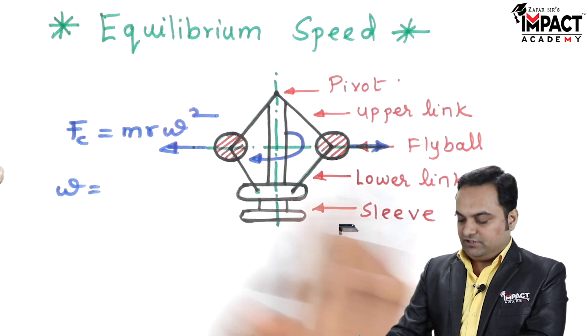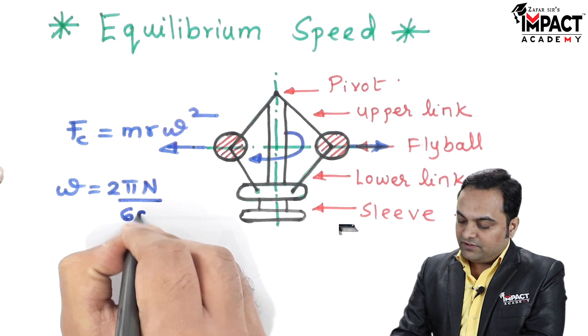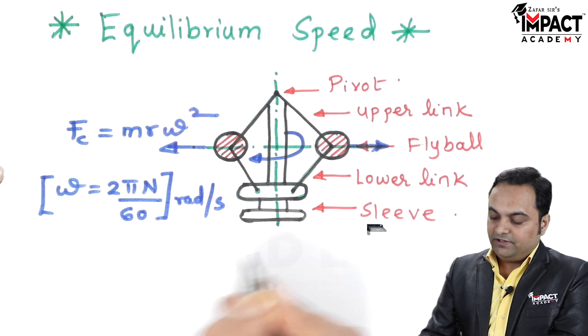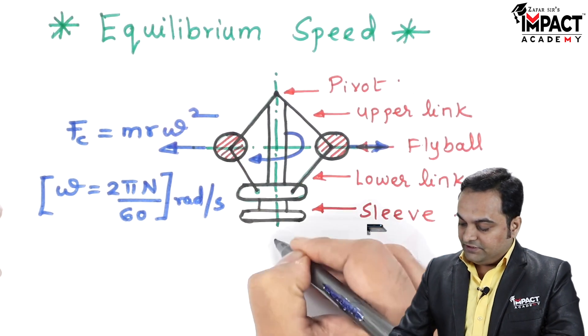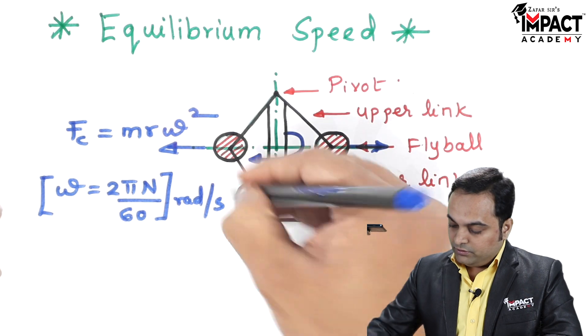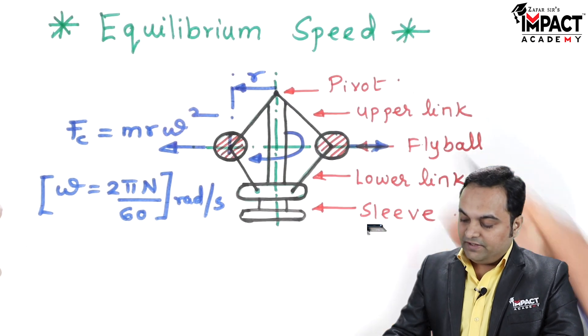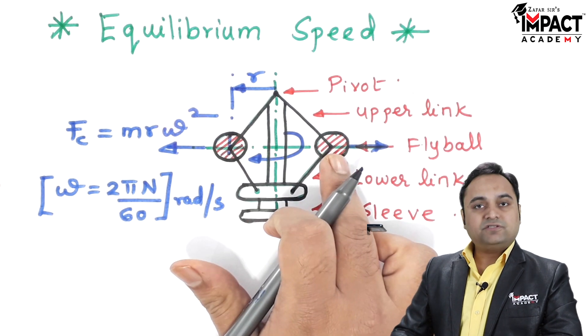It is in contact with the engine crankshaft, so 𝜔 = 2πN/60. The unit will be in terms of radian per second. Now r is the radius from the center of the spindle to the center of the fly balls, and m is the mass of these fly balls.